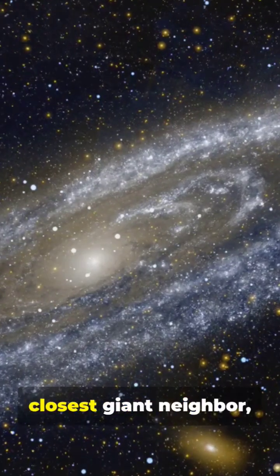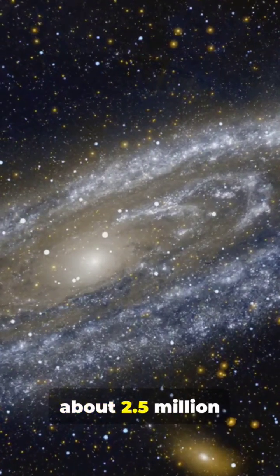The Andromeda galaxy is our closest giant neighbor, about 2.5 million light years away. And here's the cool part. It's so massive you can actually spot it with your naked eye.